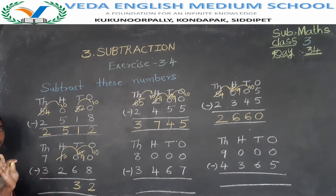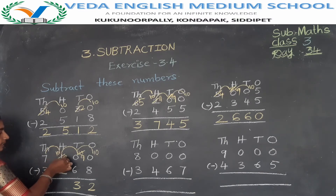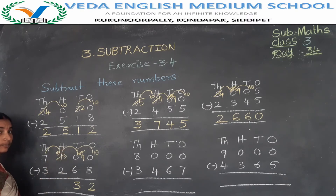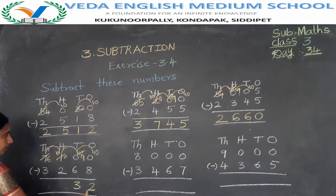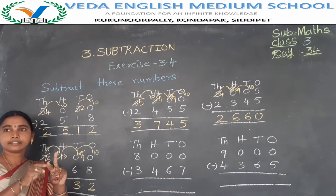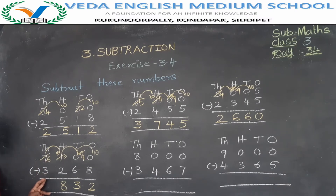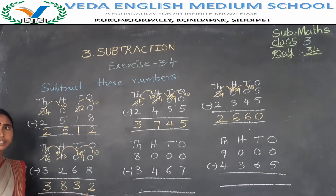0 minus 2 is not possible, so take a borrow from the thousands place to the hundreds place. 10 plus 0 is 10. First of all there were 7 thousands, but 1000 has gone to the hundreds place, so now 7 becomes 6. 10 minus 2: backward counting — 9, 8 — equals 8. Then 6 minus 3 equals 3. The difference is 3840.